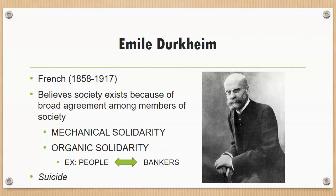Émile Durkheim believed that society exists because of a broad agreement between its members, and he identified two types: mechanical solidarity and organic solidarity. Mechanical solidarity exists only in pre-industrial times — a widespread consensus of values and beliefs with strong social pressures for conformity and dependence on tradition and family. As societies become more industrialized, they shift to organic solidarity, where social interdependency is based on a web of specialized roles. These roles make members dependent on one another for goods and services — for example, bankers need customers and customers need bankers.